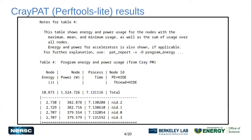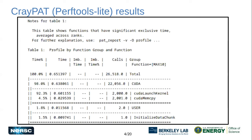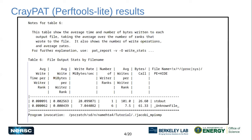Table four shows power consumption, which is useful for applications where you need to gauge how much power was required or utilized during the run. Finally, tables five and six are generated: table five reports the average time taken and number of bytes read from a file, and table six reports the average time and bytes written to a file. Since this particular code doesn't read from a file, table five is not generated. Table six shows the write speed and average bytes written to standard output.